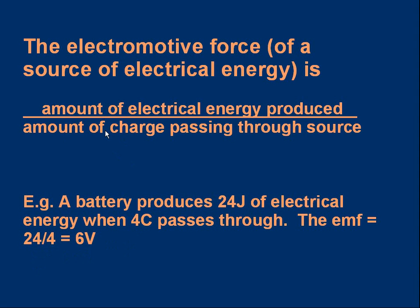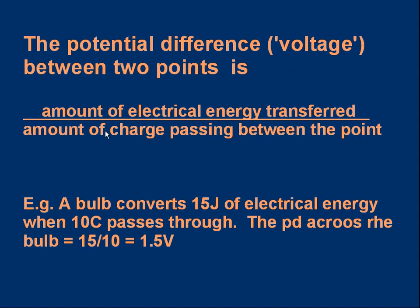The potential difference or voltage between two points is very similar: it's the amount of electrical energy transferred — whether heat, light, or otherwise — divided by the amount of charge passing between those points. For example, a bulb converts 15 joules of electrical energy when 10 coulombs pass through it. To find the voltage, divide the electrical energy by the charge: 15 joules divided by 10 coulombs equals 1.5 joules per coulomb. So the voltage across the bulb is 1.5 volts.